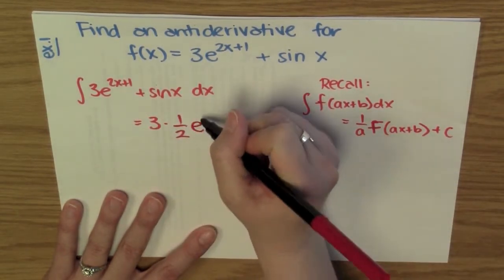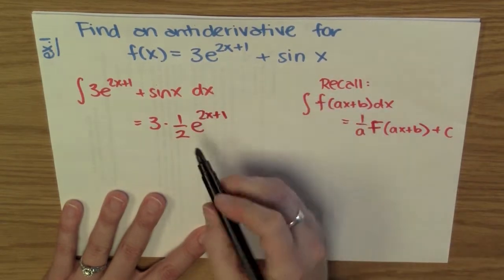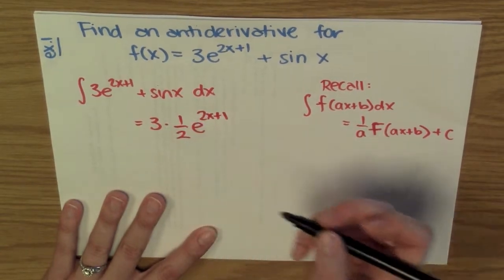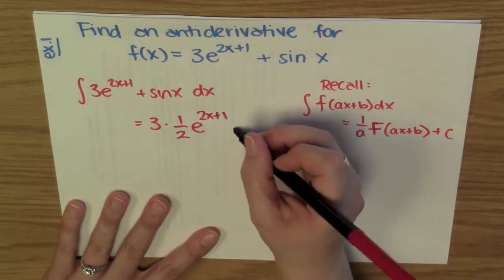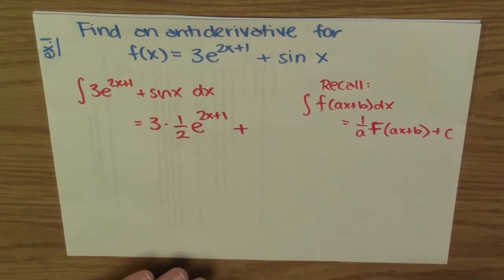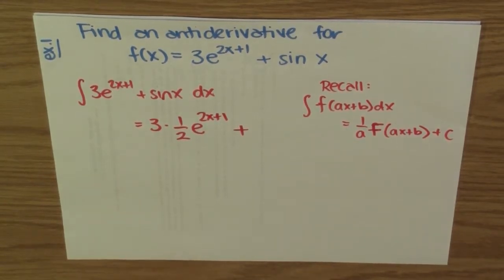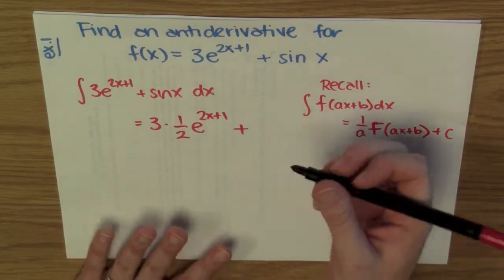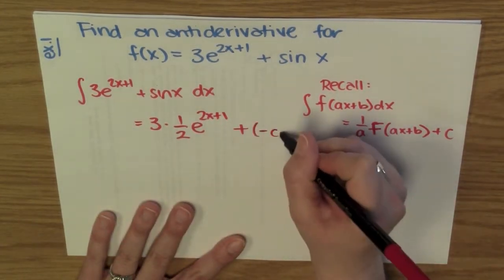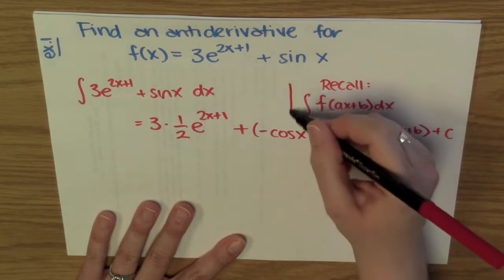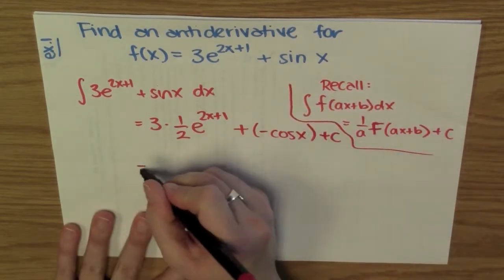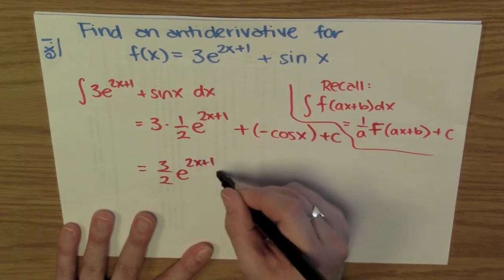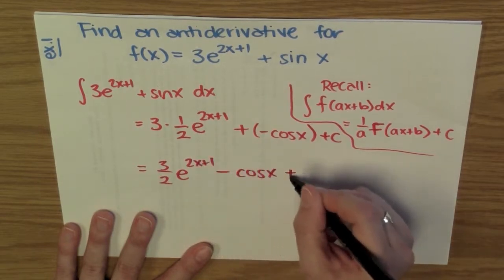So I get e^(2x+1) — that's the anti-derivative of e^(2x+1), multiplied by 1/2. Then, since the anti-derivative of a sum is the sum of the anti-derivatives, I add on the anti-derivative of sin(x), which is negative cos(x) plus c. Cleaning this up, I have (3/2)e^(2x+1) - cos(x) + c.